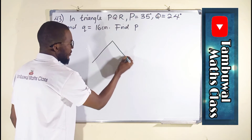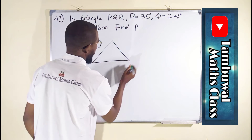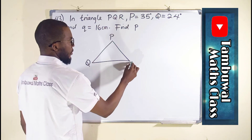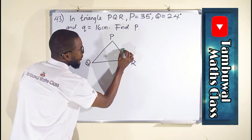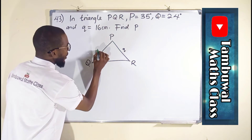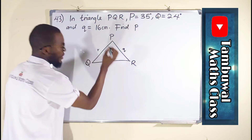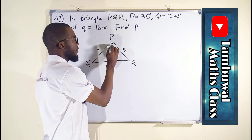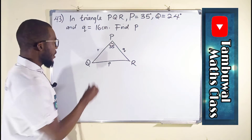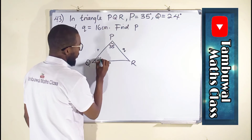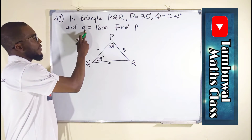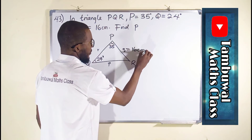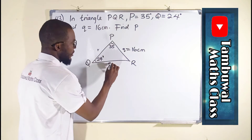We have a triangle. Let us name it as PQR. This is small q, this is small r, while this one is small p. The question says angle P, which is this angle, is 35 degrees, and angle Q is 24 degrees. We learn that small q, which is this side, is 16 centimeters. We are asked to find this side.